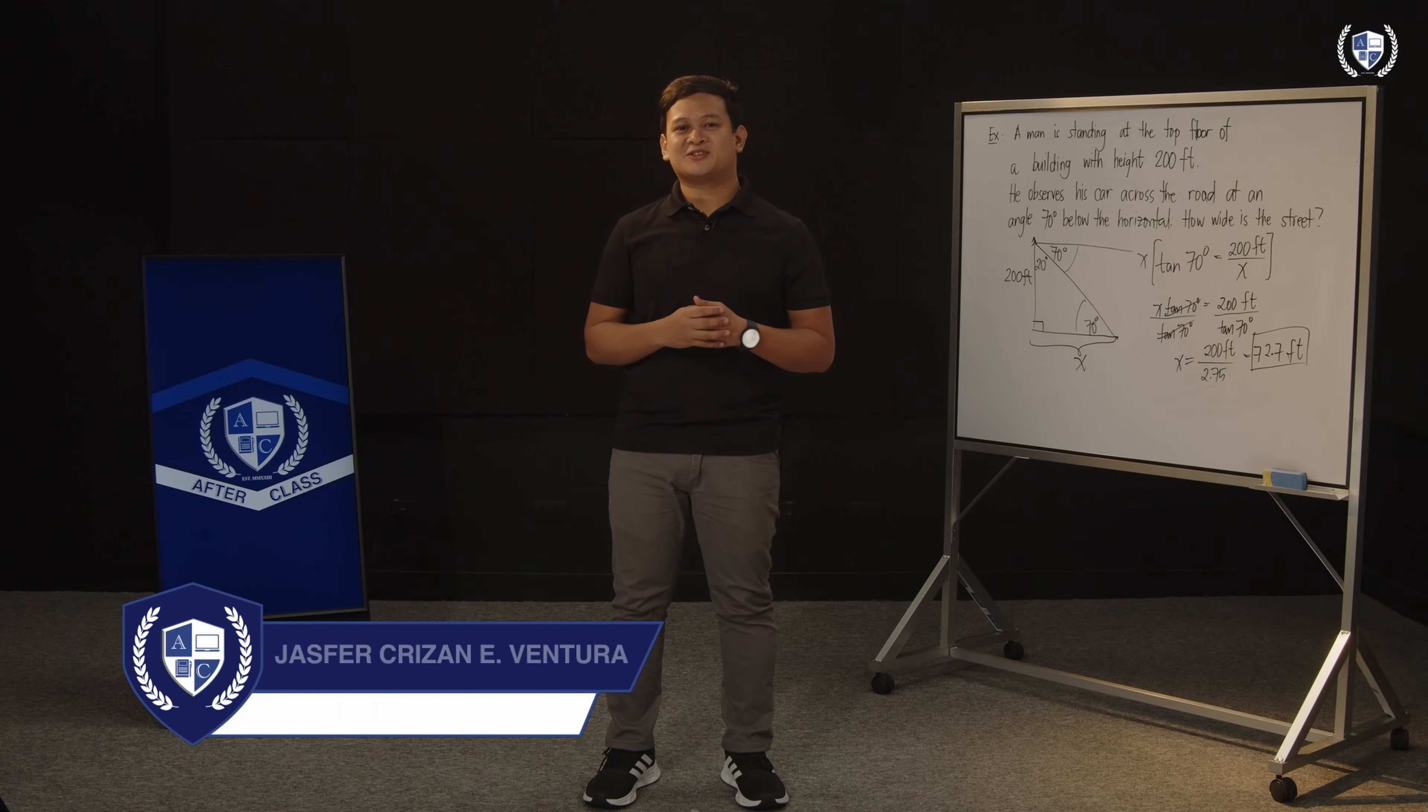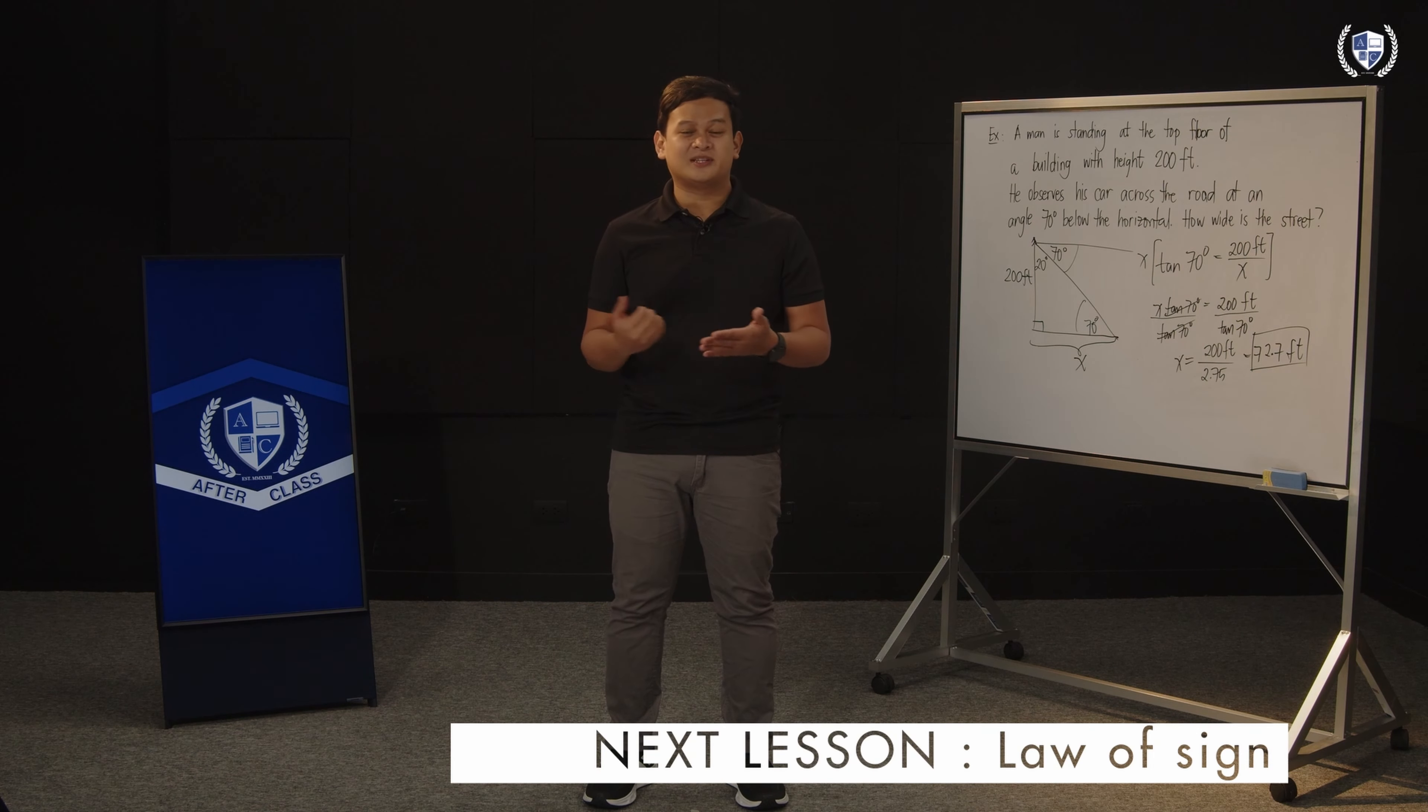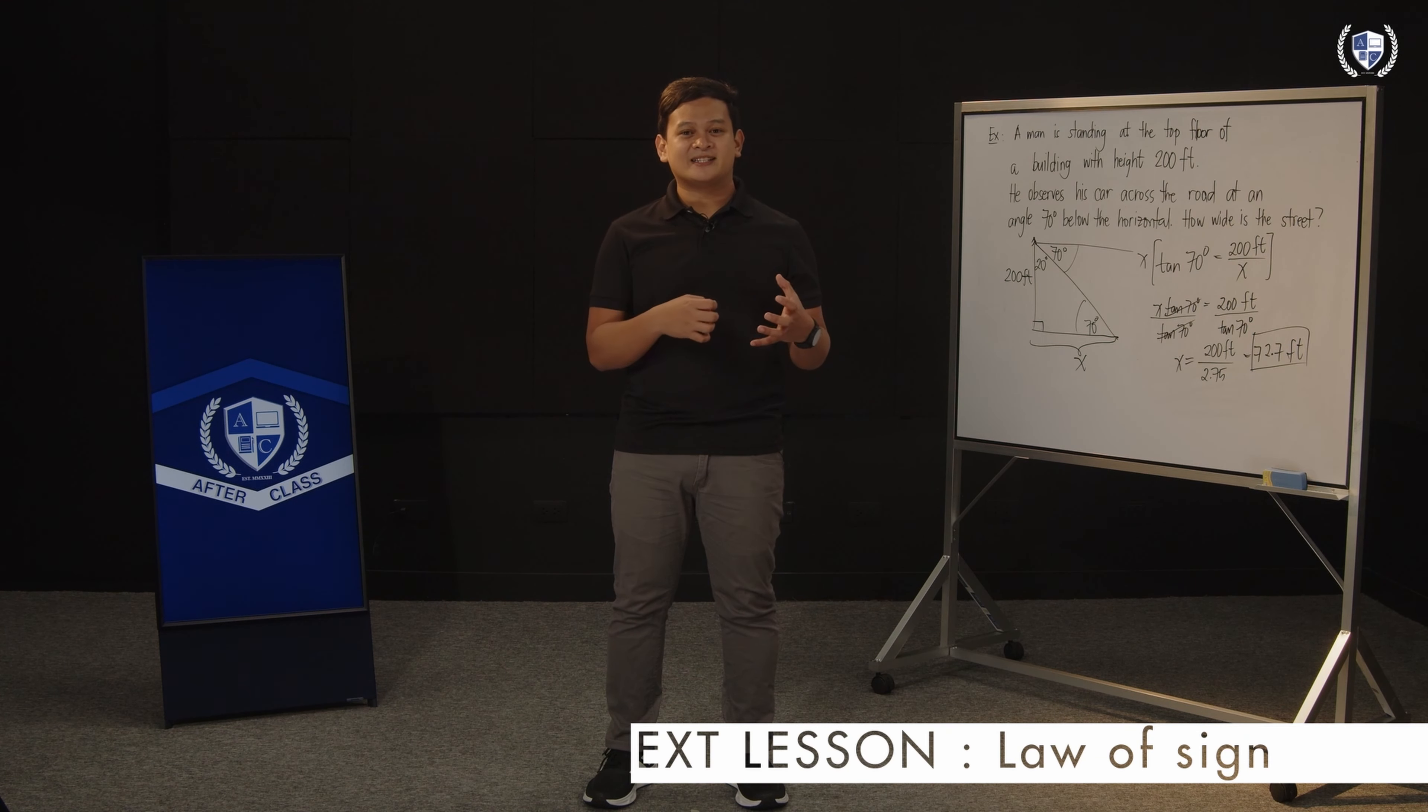For our next discussion, we'll move away from right triangles. Because not all our triangles are right triangles, right? We have triangles where all angles are 60 degrees, the equilateral triangle, and so on and so forth. So, for our next discussions, we will be talking about laws. Laws that are used in solving triangles that are not right.